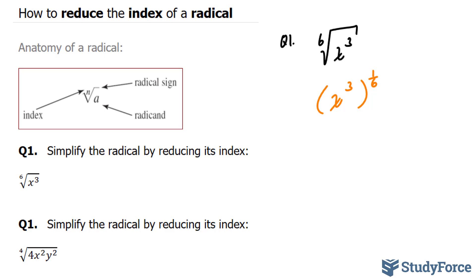Next, I'll use the laws of exponents, which tells me that if I have a power to a power, I can multiply the two powers. Three times six is three over six, so x to the power of three over six.